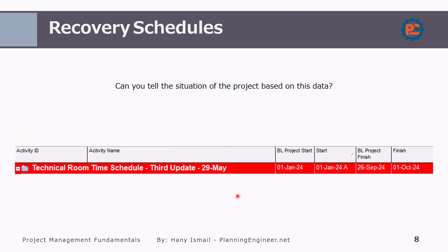From this photo, can you tell the situation of the project based on this data? We have here a project with a baseline project start, an actual start, a baseline project finish, and a forecast finish. From this snapshot, I can tell that the project planned to start 1st January 2024 and it has already started on 1st January 2024. The contractual finish date or baseline finish date is 26 September. However, the forecast finish date is 1st October.